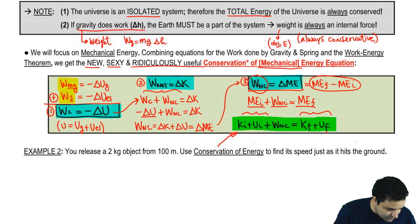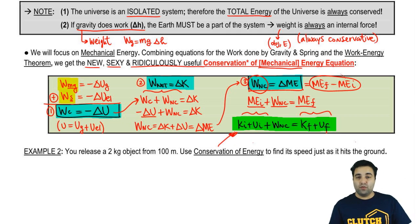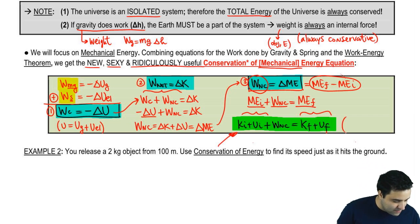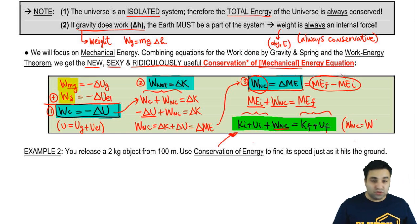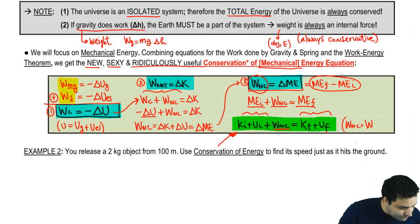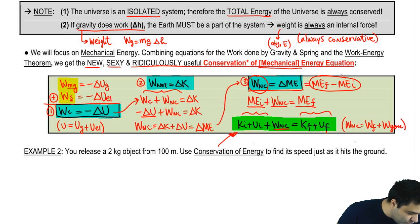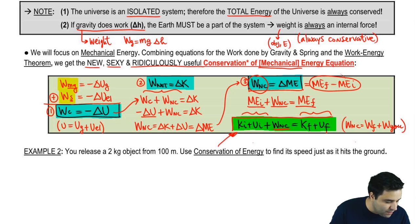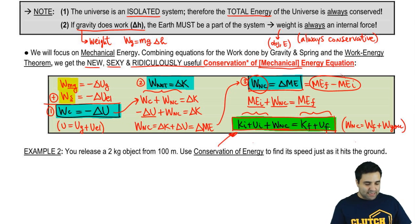This is the conservation of energy equation, and most of the problems we're going to solve will begin with that equation. The work non-conservative term includes the work done by friction plus the work done by an applied force — by you or by some object. So I've shown you four equations, but this combined one is by far the most important and we're going to use it over and over. Let me do a quick example to see how it works.